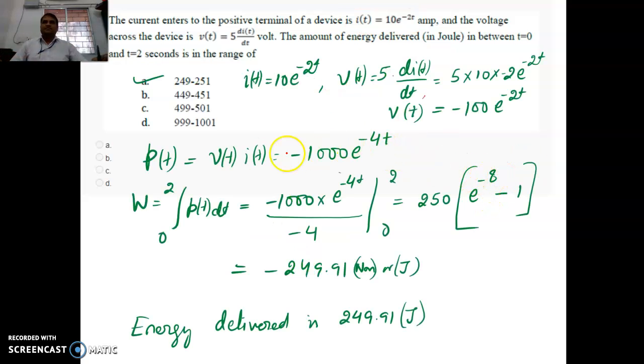So here, Pt is Vt into I of t. It is coming around minus 1000 e to the power minus 4T. And by finding the energy in this way, you will evaluate and you will get this answer in joules, 249.91. And this is negative, that means it is delivered. Energy is delivered. That value is 249.91. The answer is A.